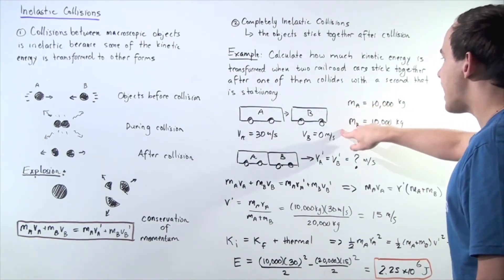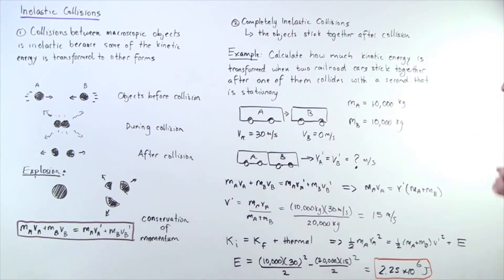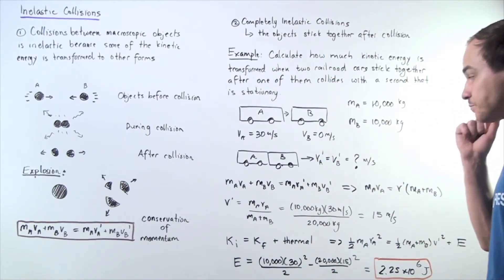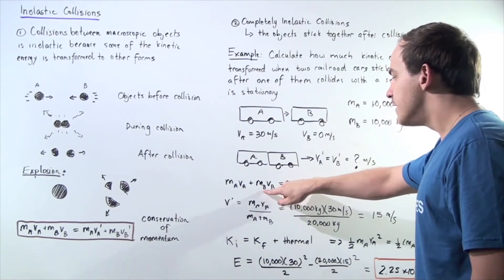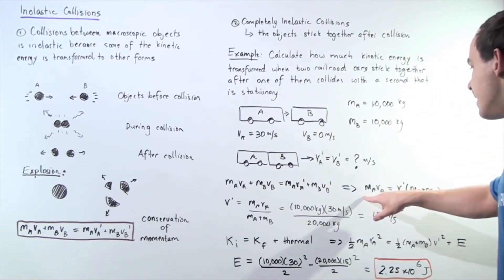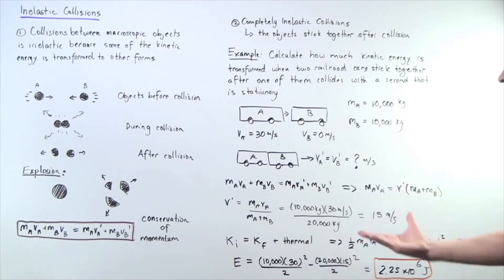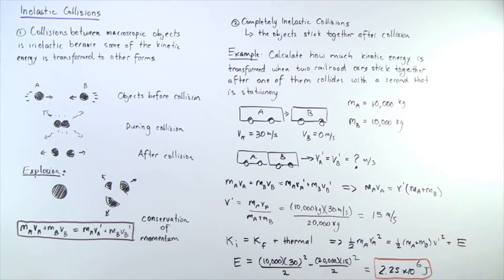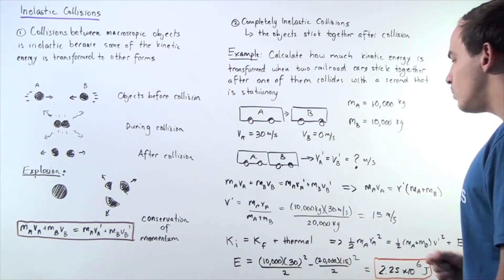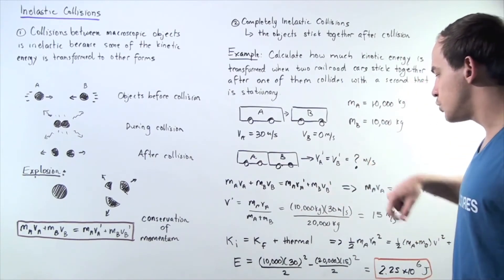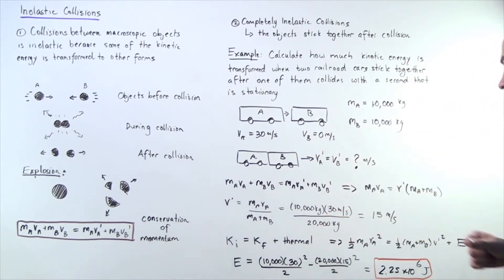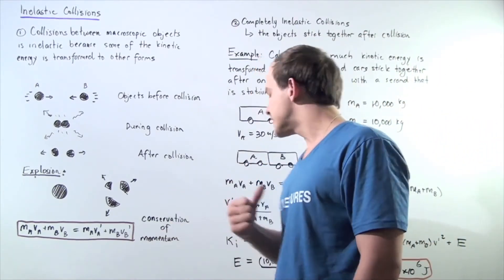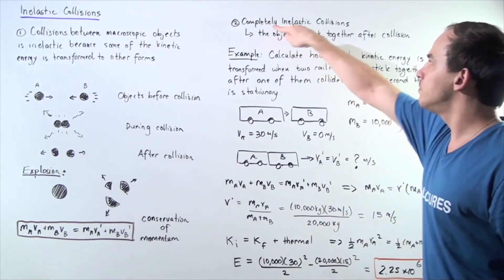The mass of A and the mass of B is each 10,000 kilograms. Using the conservation of momentum equation, we can solve for our final velocity. Notice we have M_B times V_B, and since V_B is 0, this term cancels out. We're left with M_A times V_A equal to V prime — the velocity of the system after the completely inelastic collision — multiplied by the sum of the two masses. Solving, we get the final velocity equal to 10,000 times 30 divided by 20,000, which equals 15 meters per second.